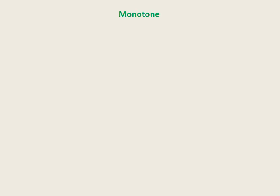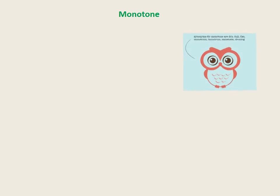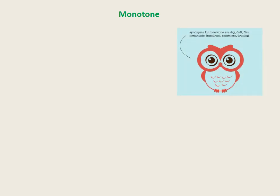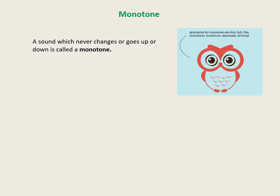Monotone. You daily have conversations with your parents, friends, teachers, and siblings. You change the pitch, volume, rhythm, timbre, and speed of your voice to express your meaning. For instance, you make your voice assertive while asking a question, stress words to add emphasis, pause to add suspense, and vary your voice to express different emotions. However, while giving a speech, your tone may remain unvarying and you might end up saying everything in a flat tone. A sound which never changes or goes up or down is called a monotone.